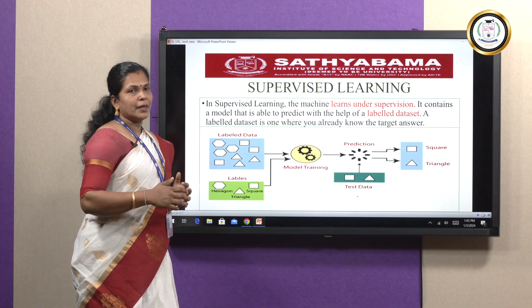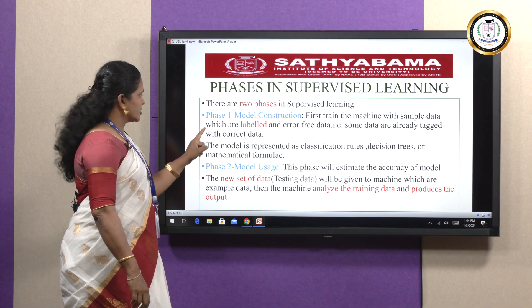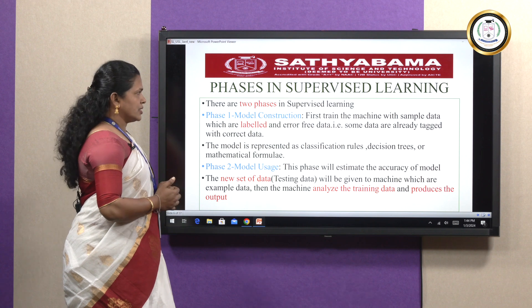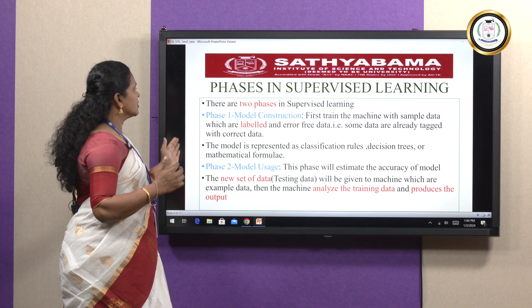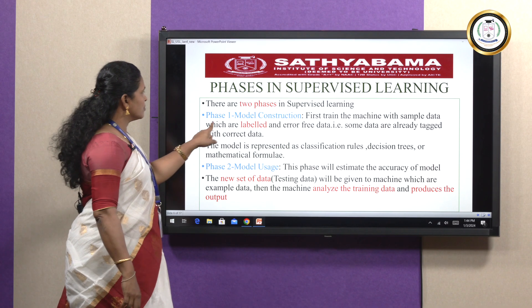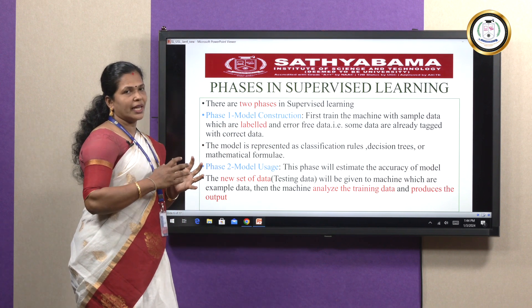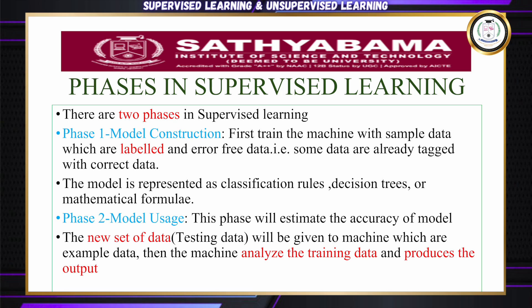The phases of supervised learning: there are two phases. Phase one is model construction — train the machine with sample data which are labeled and error-free. Some data are already tagged with the correct answer. The model is represented as classification rules, decision trees, or mathematical formulas.